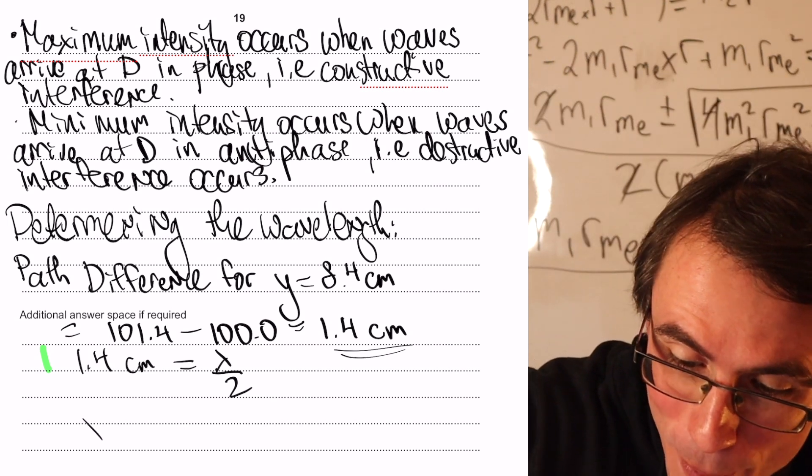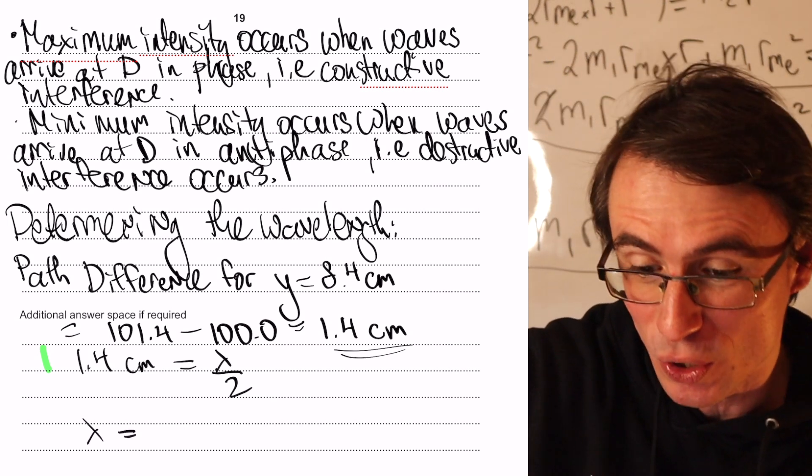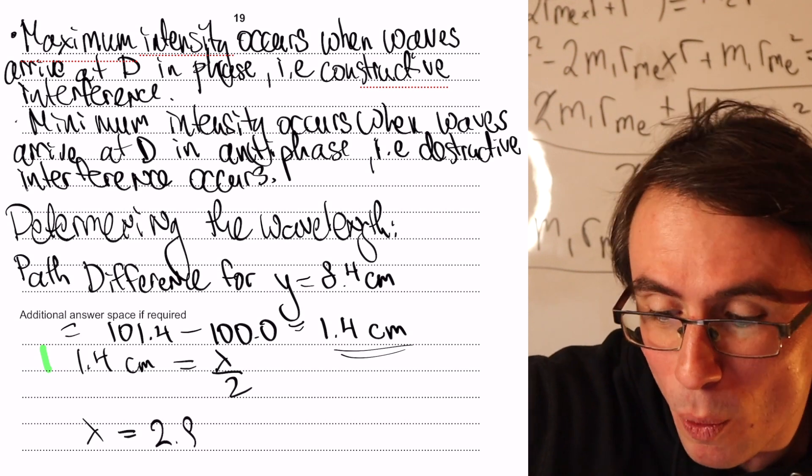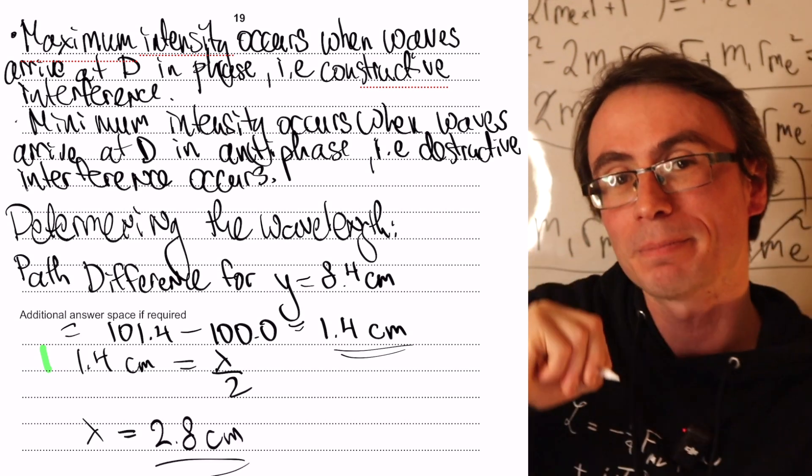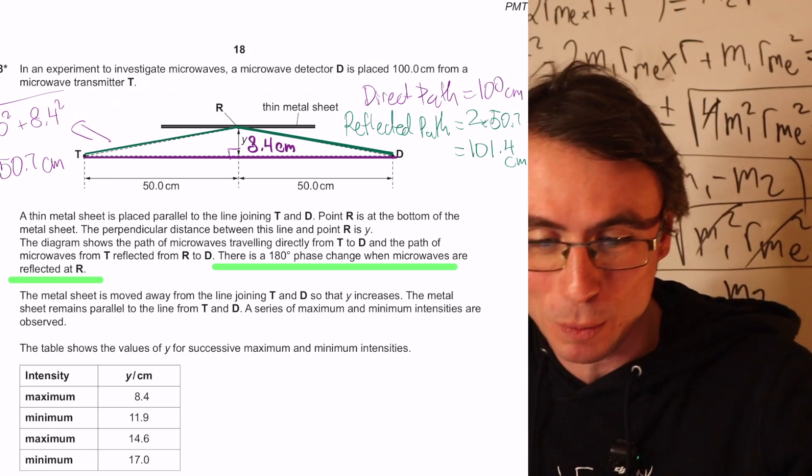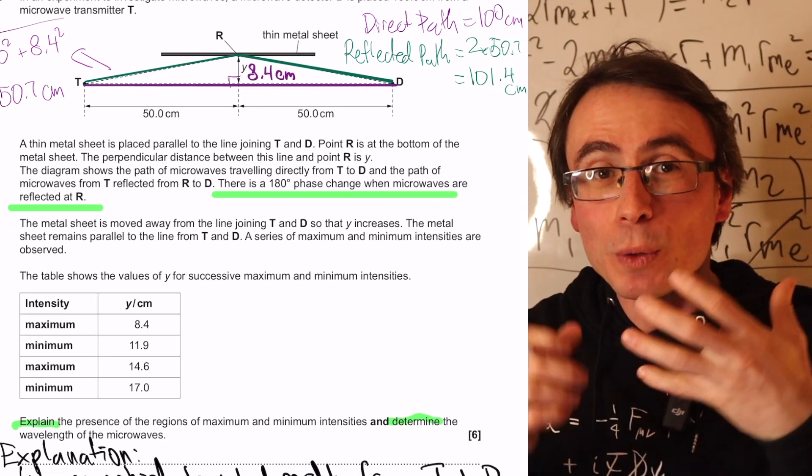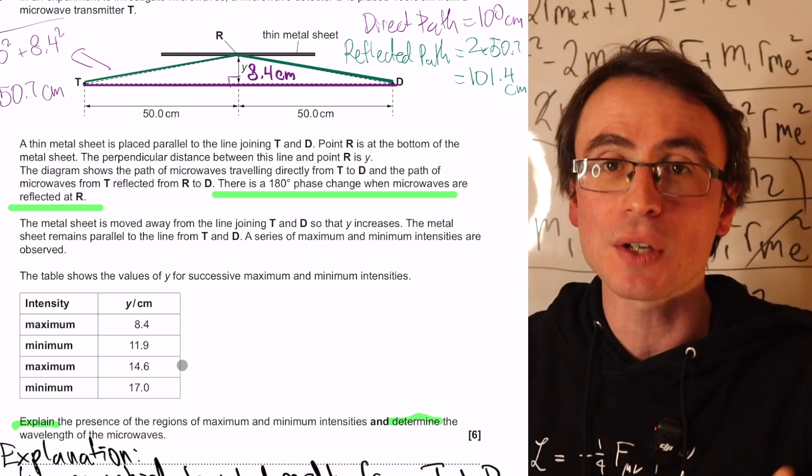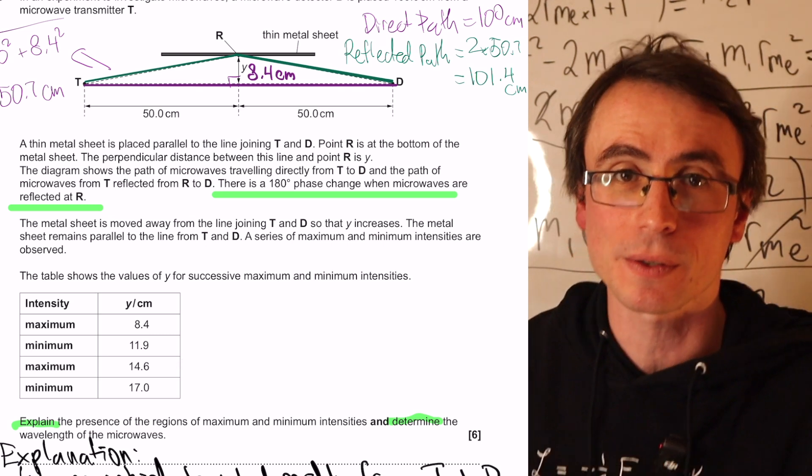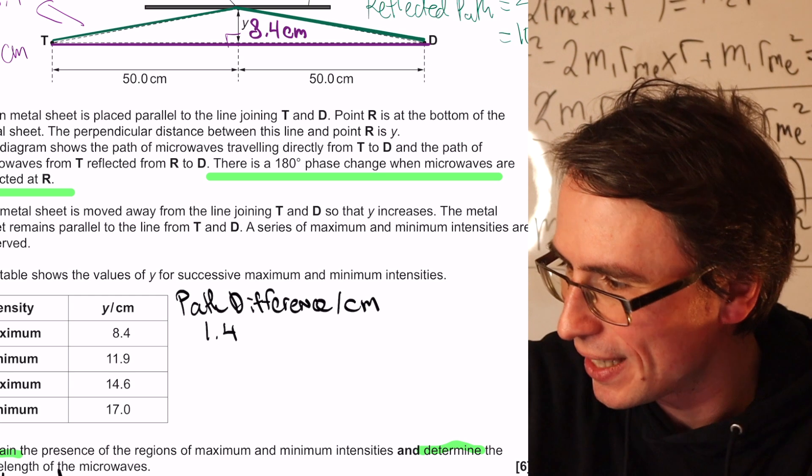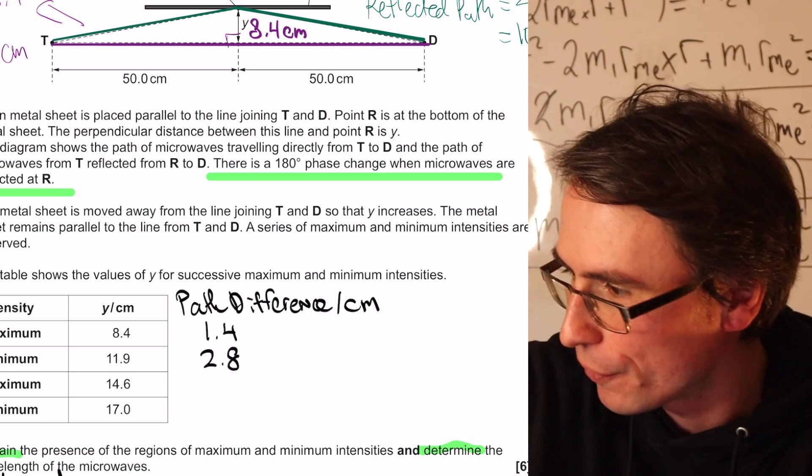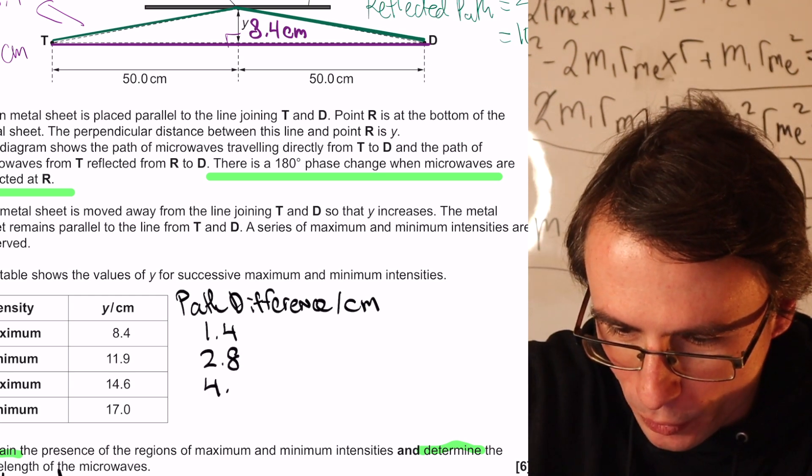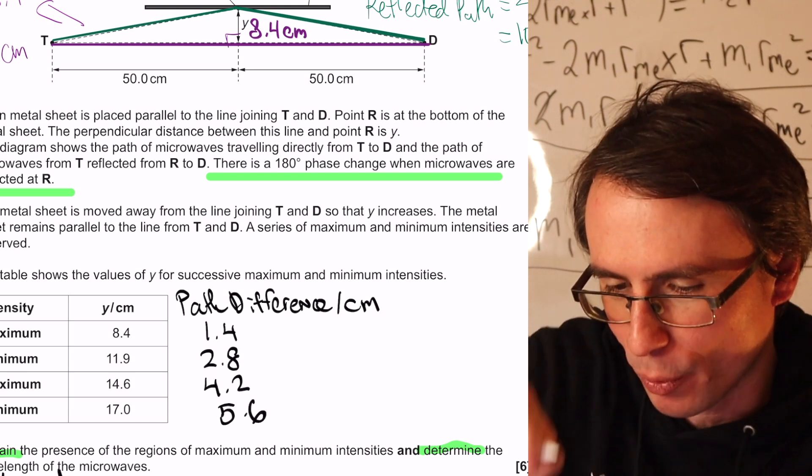So this means that our wavelength is actually just equal to 2.8 centimeters. Because this is a six marker question as well, one thing I would definitely make sure to do is to calculate the path difference for a few more data points. Simply by using Pythagoras, we're going to get the following path differences, 4.2 and 5.6. And we can do the same calculations to further confirm the value of our wavelength.